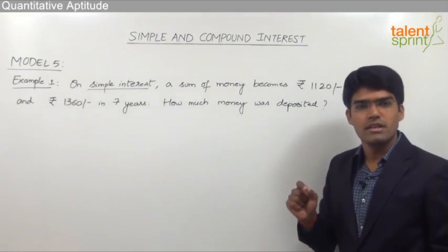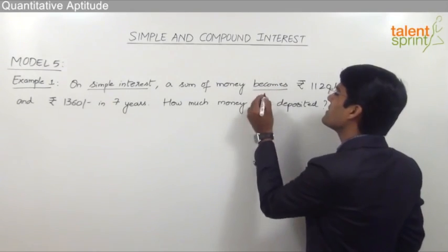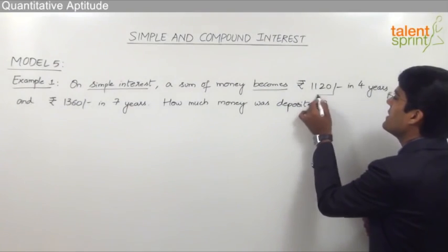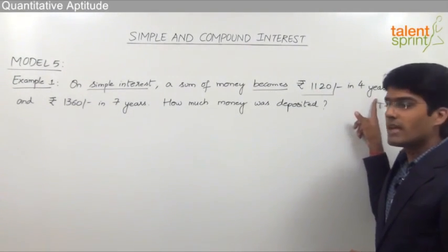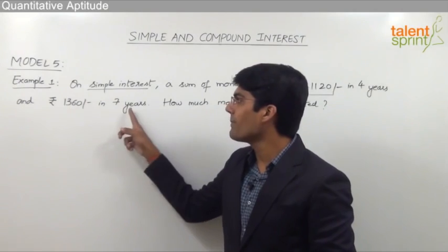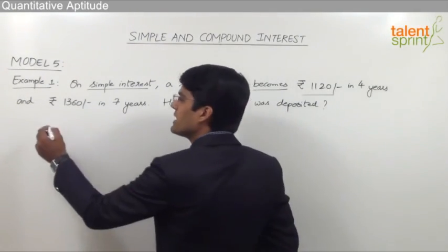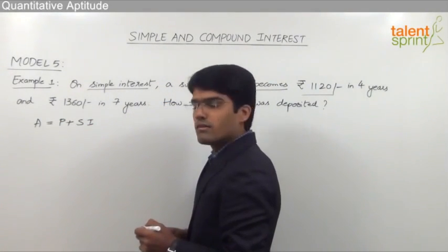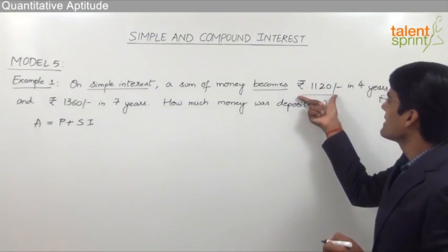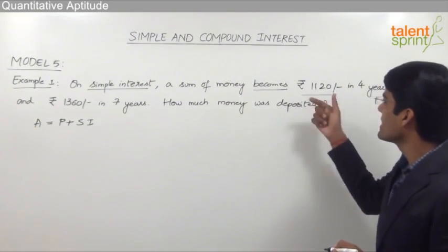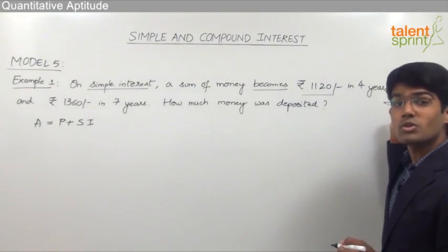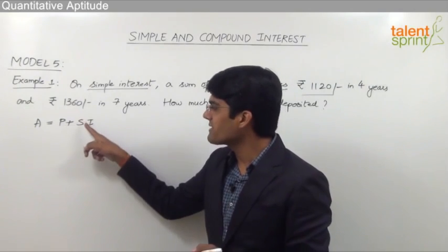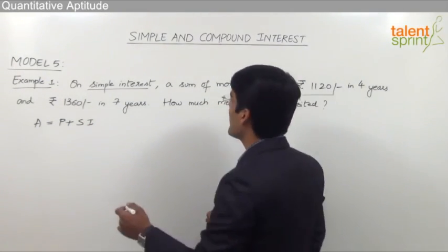As I have already mentioned in one of the previous questions, whenever the term 'becomes' is used, we always refer to the total amount. So very clearly, Rs. 1120 is the total amount in 4 years and Rs. 1360 is the total amount in 7 years. We know that the total amount is nothing but principal plus simple interest. So 1120 is the principal plus simple interest for 4 years, and similarly, 1360 is the principal plus simple interest for 7 years.